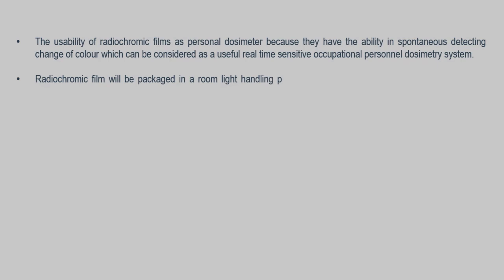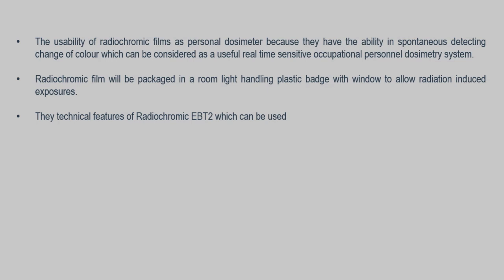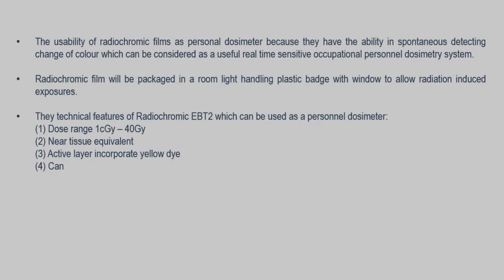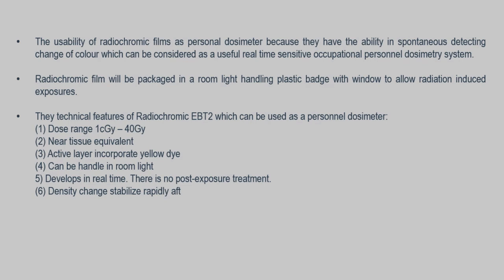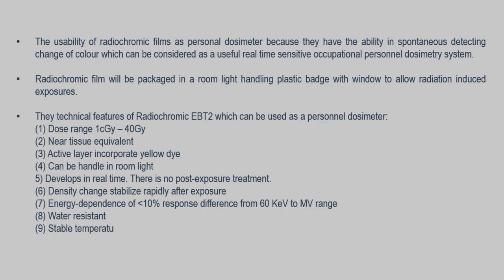These are the technical features of the radiochromic film EBT2 which can be used as a personal dosimeter. The dose range is from 1 mGy to 40 Gy. It has a near tissue-equivalent active layer incorporating yellow dye. It can be handled in room light. Development is in real-time as there is no post-exposure treatment. The density change stabilizes rapidly after exposure. The energy dependence is below 10% with a response to doses from 60 keV to megavoltage range. It is also water-resistant and stable at temperatures up to 60 degrees Celsius.